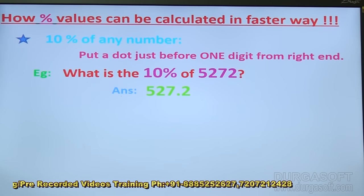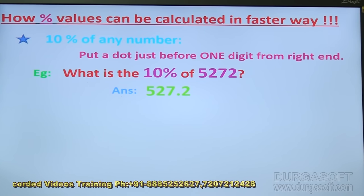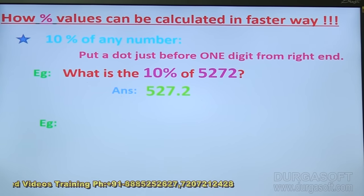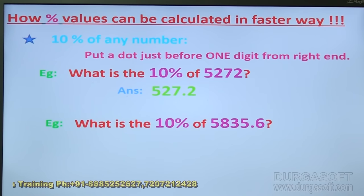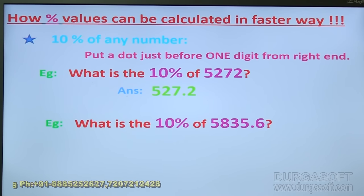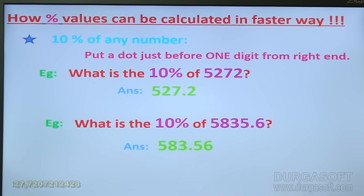If there is already a dot in the number, just move it one step backward. For example, 10% of 5835.6 — the dot already exists, so move it one step back to get 583.56. If no dot exists, place one before one digit from the right. If a dot exists, move it one step backward.